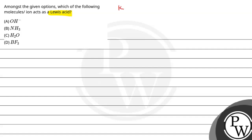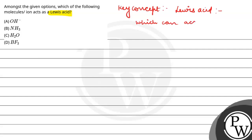We have to identify the Lewis acid. The key concept is Lewis acid. Lewis acid is a species which can accept electrons, or we can say it has vacant orbitals.